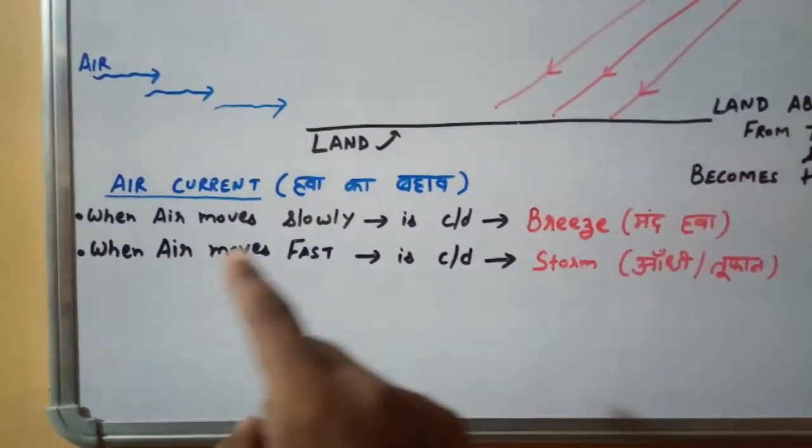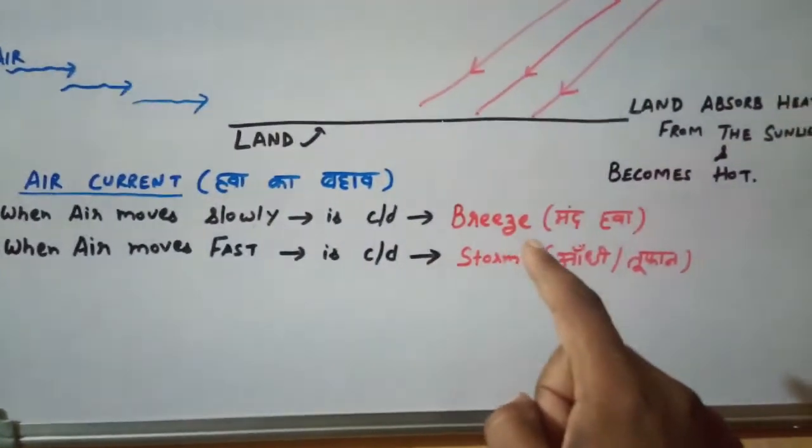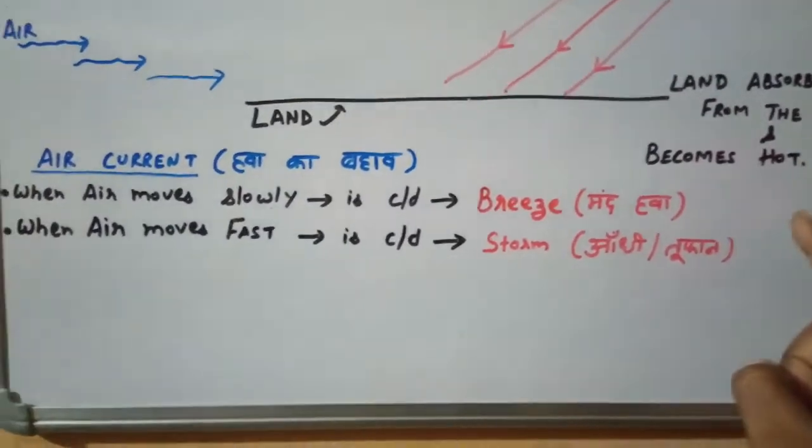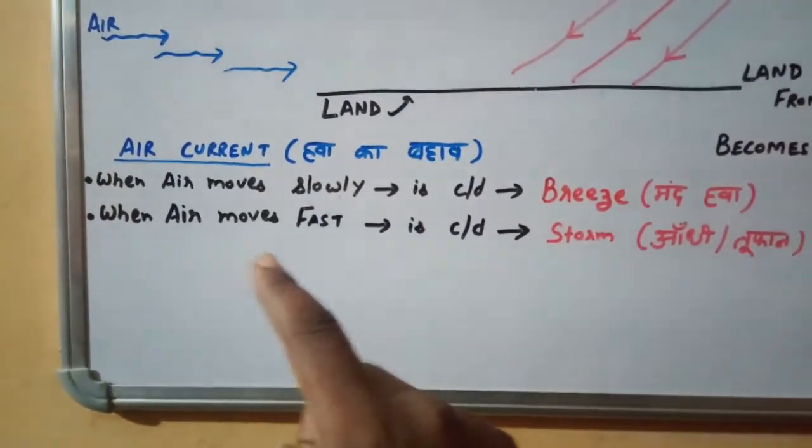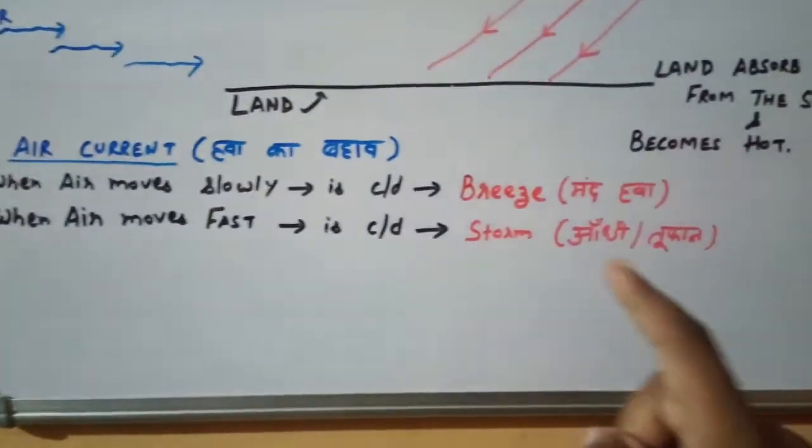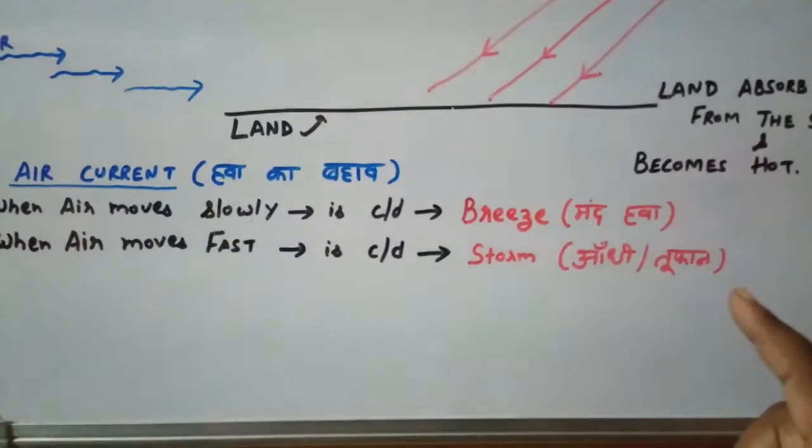When the air moves slowly, it is called breeze, that is mand mand hawa. But when the air moves fast, it is called storm. This means Andi or Tufan.